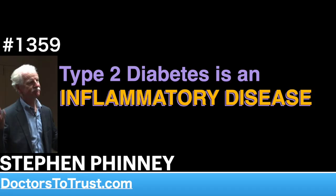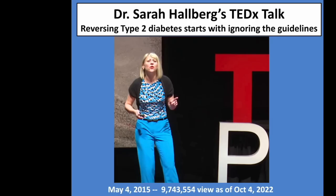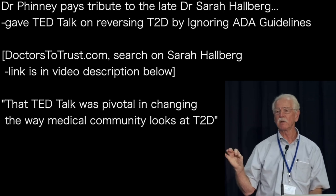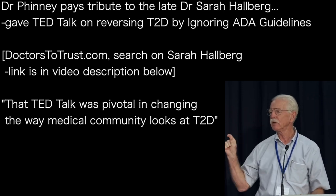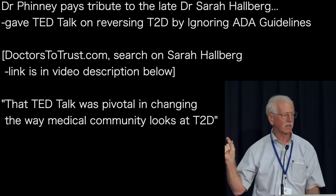This woman got up on the stage — she's not dressed in fancy designer clothes, she's a very unassuming person — and in 18 minutes stuck her thumb into the eye of the diabetes establishment. The title of her talk was 'Reversing Type 2 Diabetes Starts with Ignoring the Guidelines.' Now, if she'd been an academic, that talk would be a career-ending move. She would never get another grant.